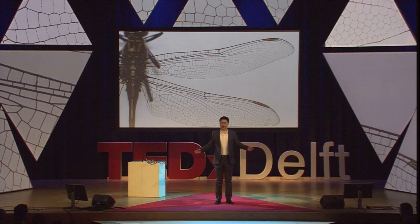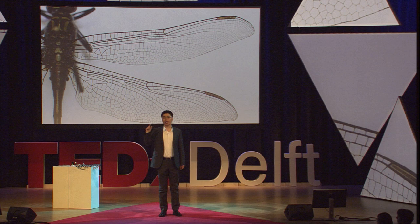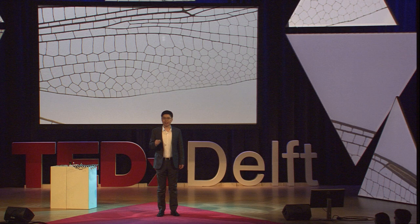Nanomaterials and nanostructures exist everywhere in our natural world. Take a look at the wing of a dragonfly. If we zoom in 100,000 times and look at the transparent membrane, we can see the nanostructures which are invisible to the naked eye.